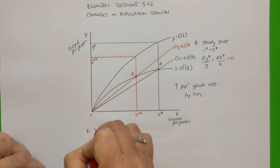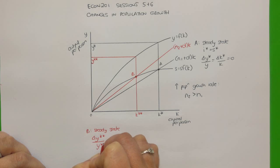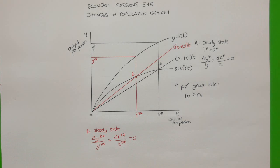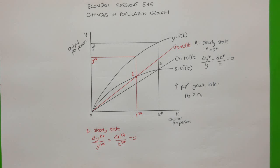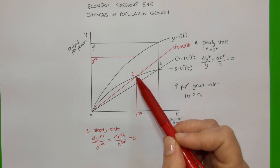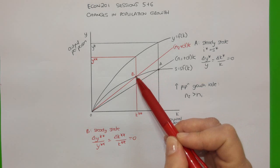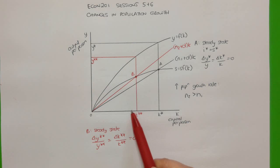At point B in steady state, the change in output per person equals the change in capital stock per person, and both equal zero. So at both point A and point B, those are both steady states — investment required equals savings being generated. At point B, the population growth rate is higher than at point A, and the consequence of that higher population growth rate is that output per person in the new steady state is lower than at the old steady state, because capital stock per person at the new steady state is lower than at the old steady state.